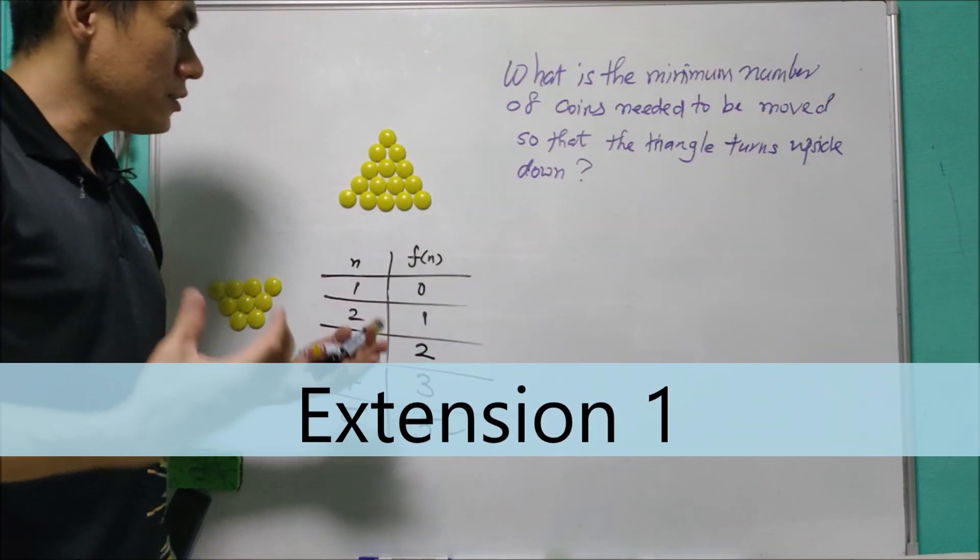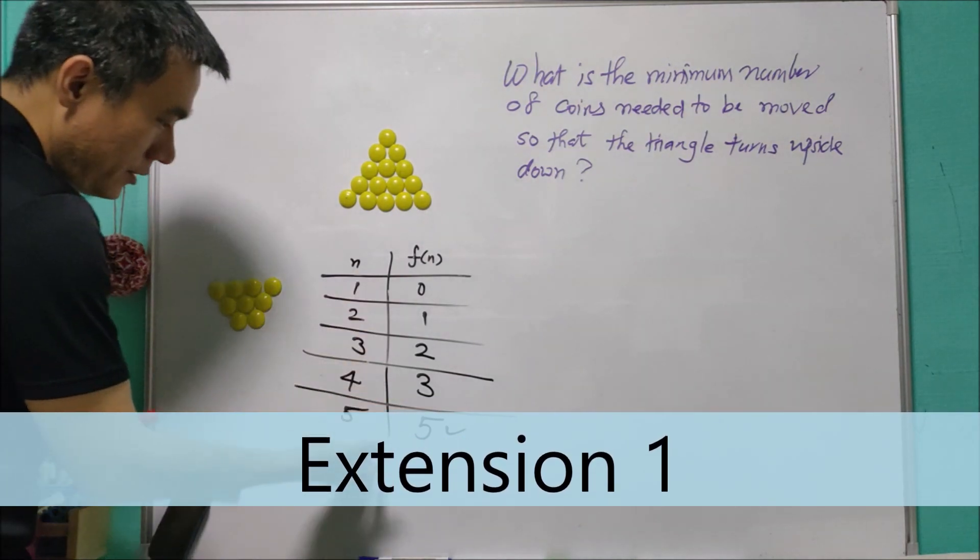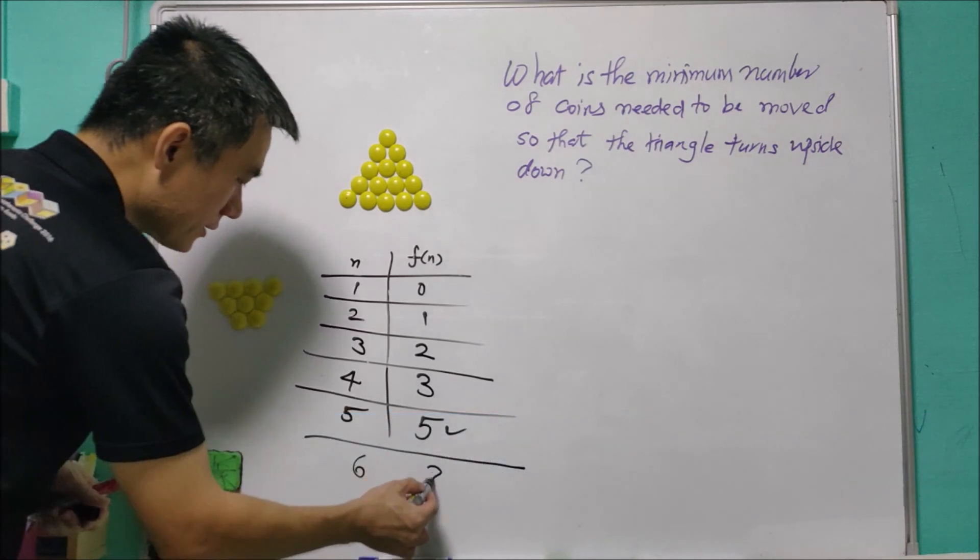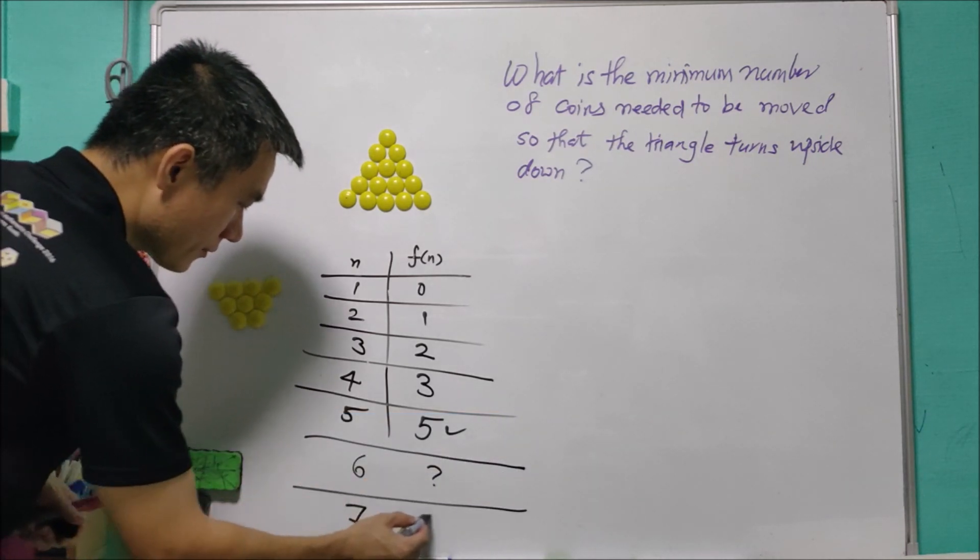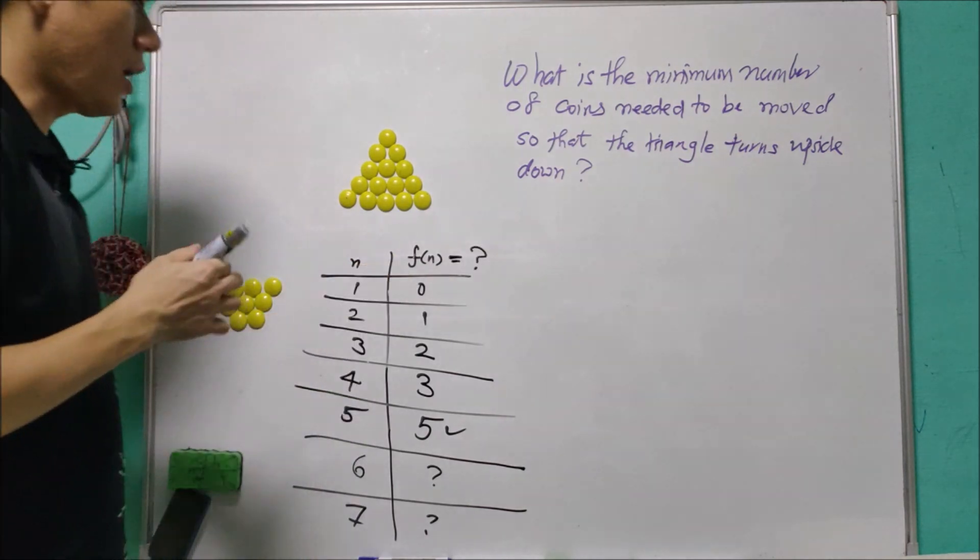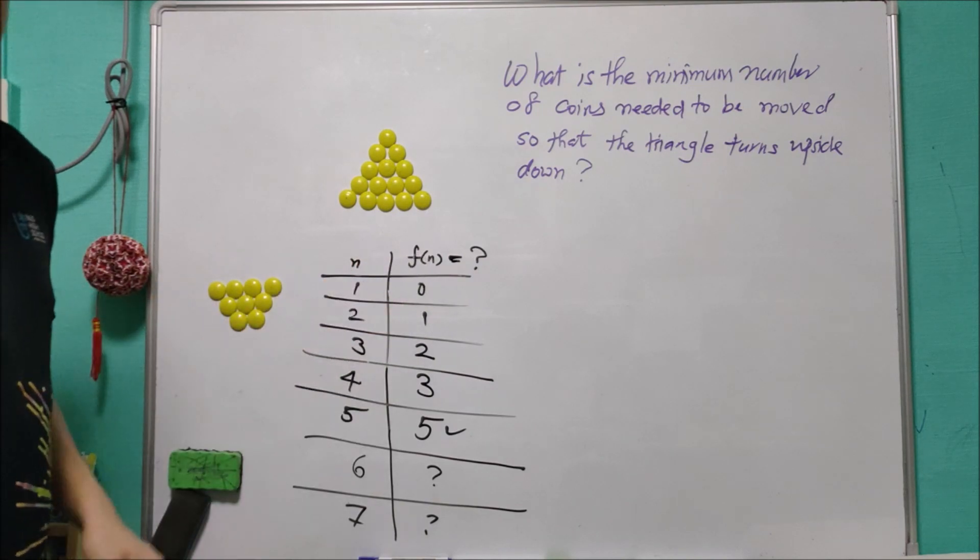One natural generalization for this question will be: what happens if it goes to n? We can move on. What happens for six? What happens for seven? And what happens for n in general? Are we able to find a general formula for n rows?